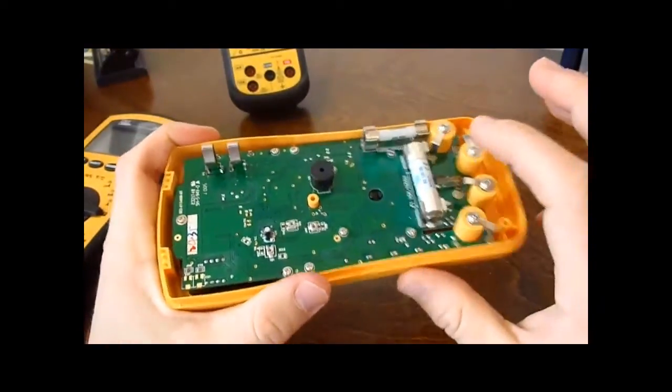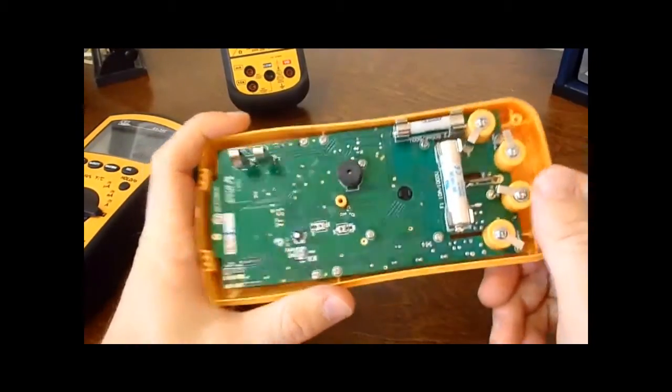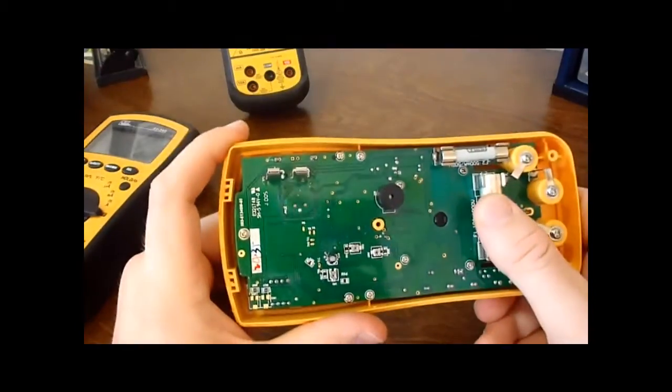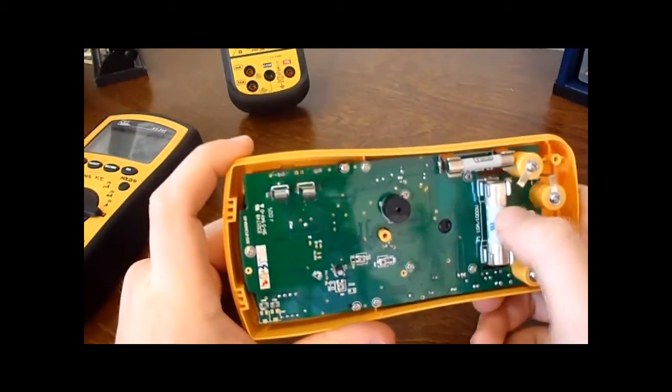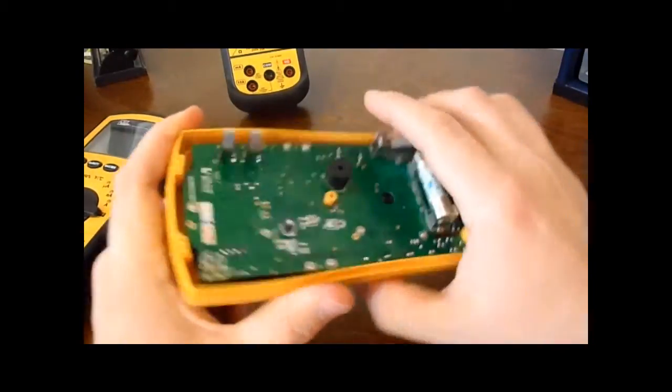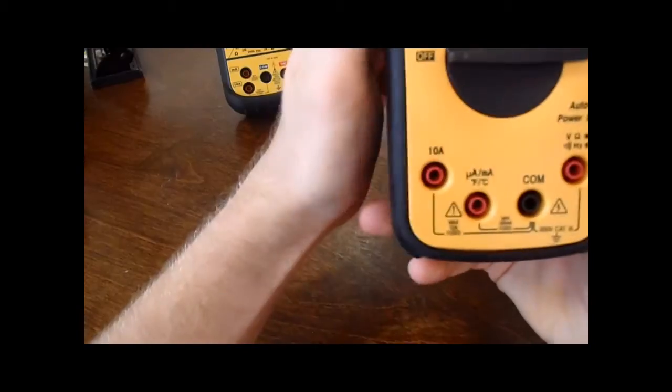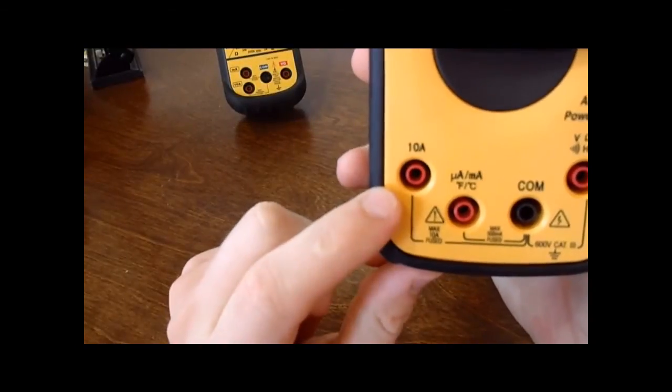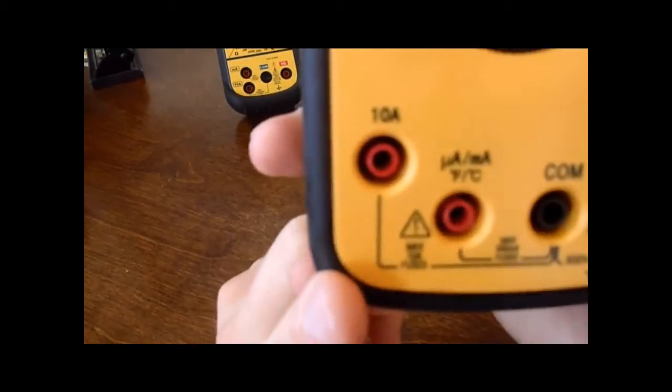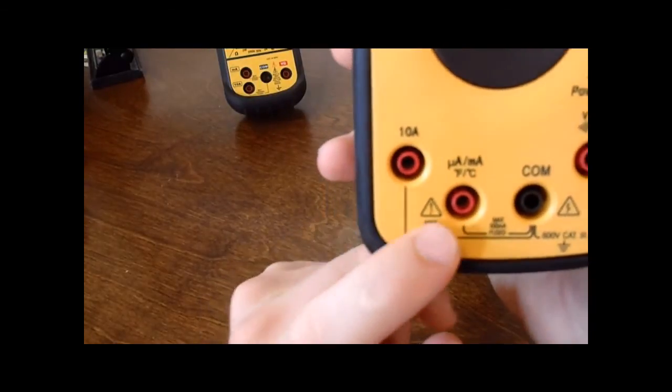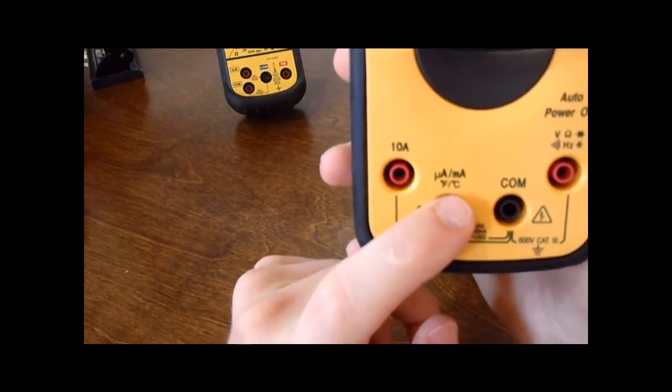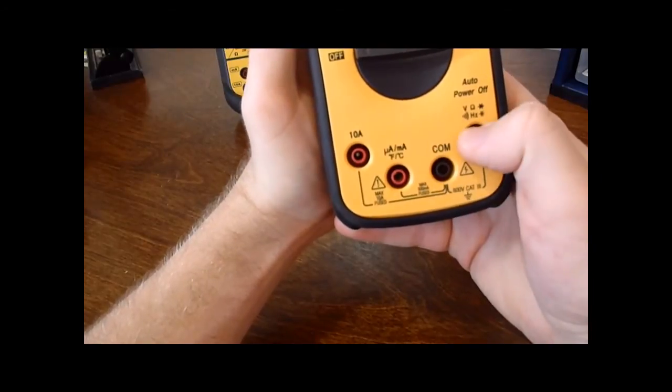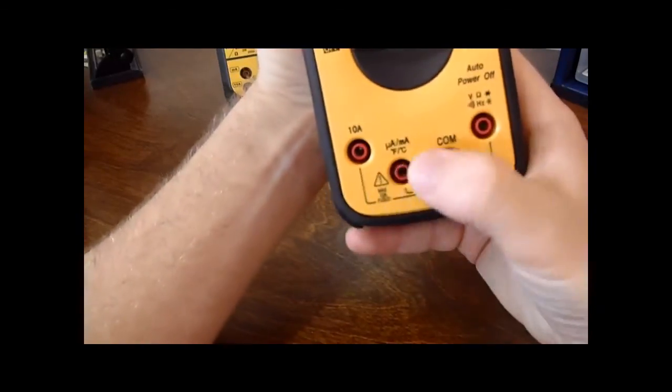It has fuses for your high amperage and your milliamps. So at least it is fused. On some of the cheaper meters in this price range, they don't have fused amperage. Going into the details, you have one just for measuring high current, fused for a maximum of 10 amps. You have your microamps, milliamps, Fahrenheit and Celsius as a dedicated terminal, and then obviously your common and everything else. I really like that these are separated.